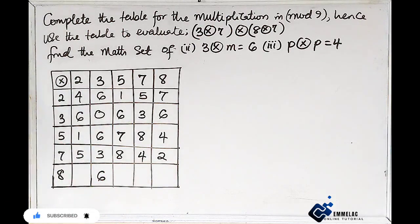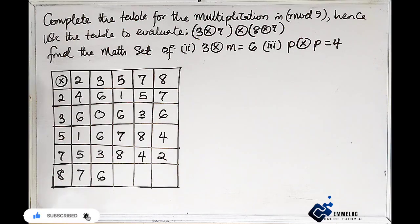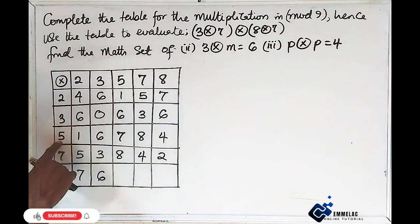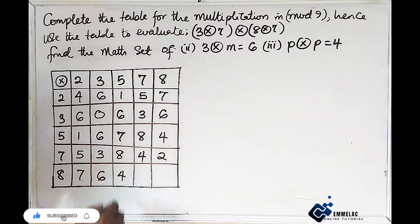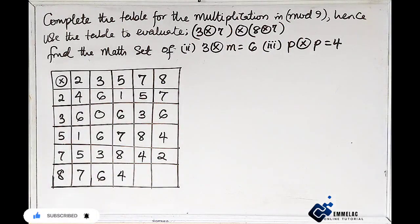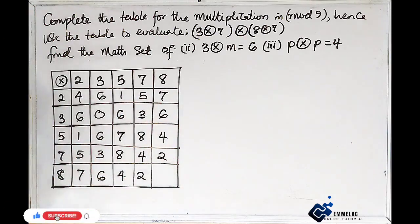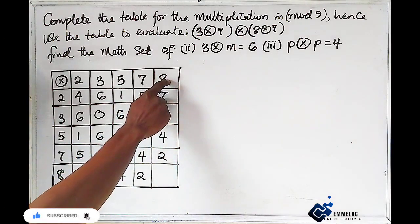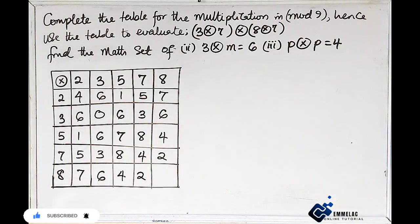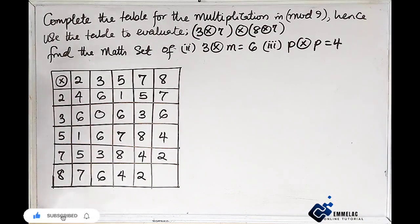For the ×8 column: 2×8 = 16, and 16 minus 9 = 7. Then 5×8 = 40, and 40 minus 36 = 4. Then 7×8 = 56, and 56 minus 54 = 2. Finally, 8×8 = 64; the largest multiple of 9 below 64 is 63 (7×9), so 64 minus 63 = 1. The multiplication table in mod 9 is now complete.